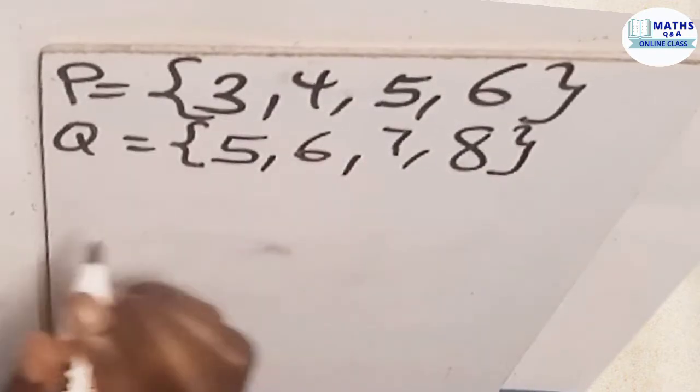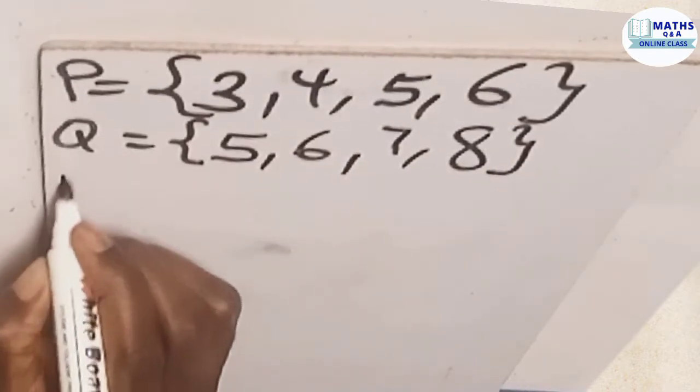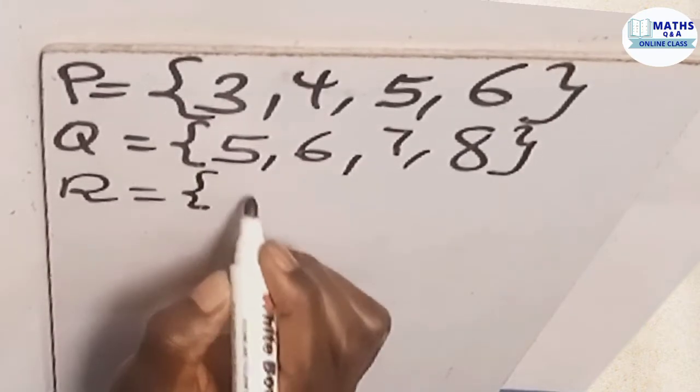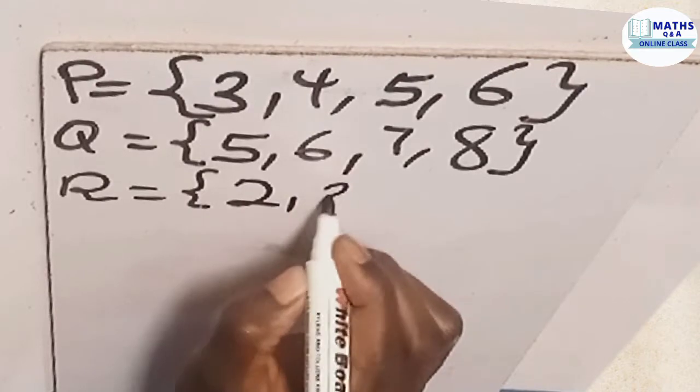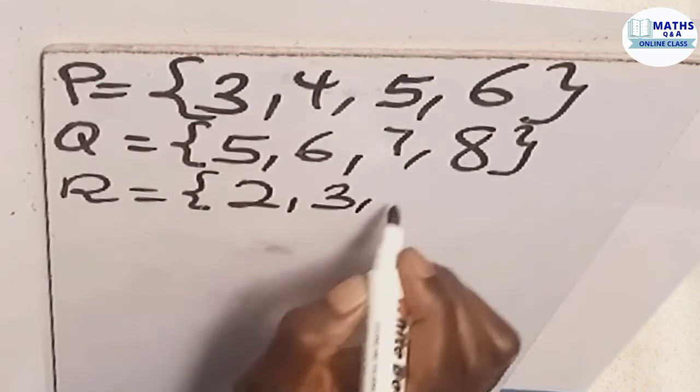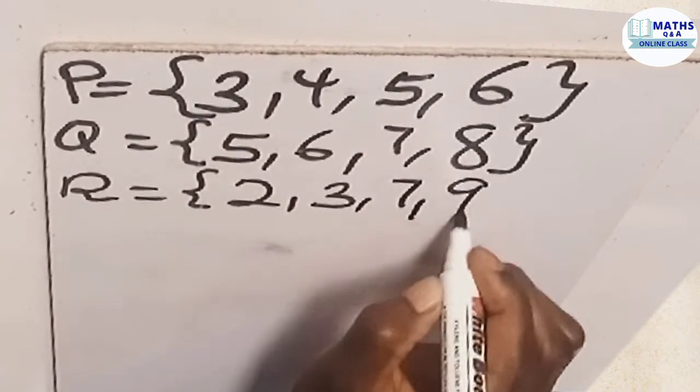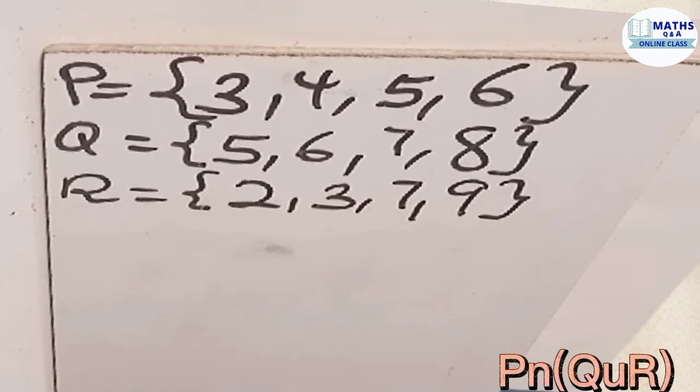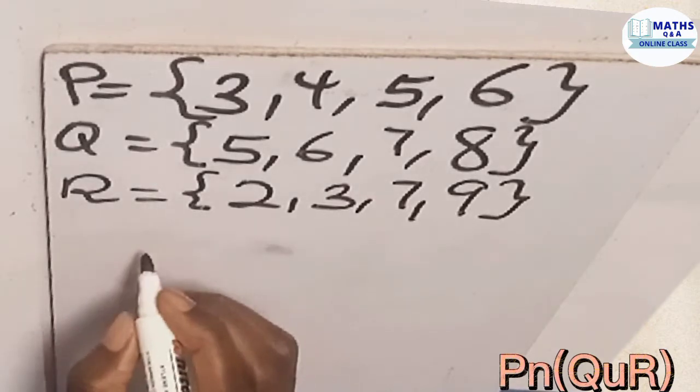And then we have another set that is the third one which is R and that is having the members 2, 3, 7, and then 9. And we are told to find the set P intersection Q union R. The first thing we have to know is to identify set which belongs to Q union R.